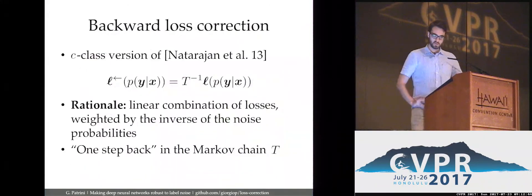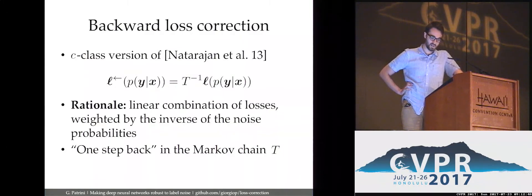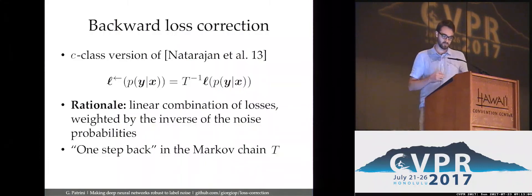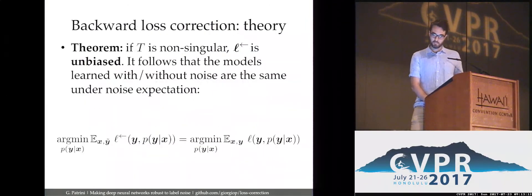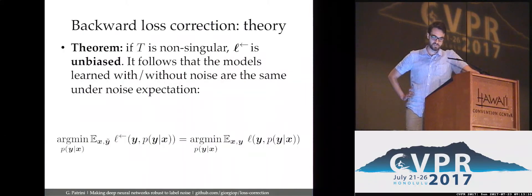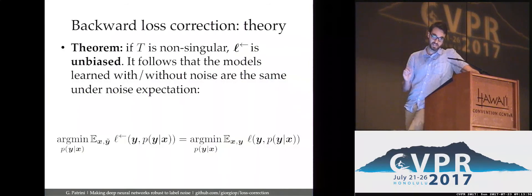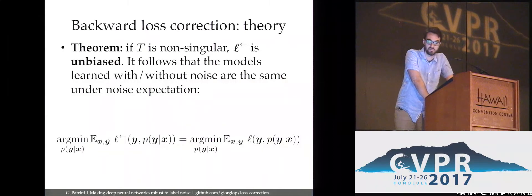How can we be robust to such noise? Our first recipe is called backward loss correction, inspired by Natarajan et al. We take the vector loss and multiply it by T-inverse — for now assuming we know T. The idea is to act defensively: instead of computing the loss on one particular label value, we take a linear combination of losses weighted by the inverse probability of the noise. This comes with theoretical guarantees: it is an unbiased estimator of the original loss. In particular, the minimizer of the noisy risk for the corrected loss is equivalent to the minimizer of the risk on the clean labels with the original loss — basically a definition of robustness.